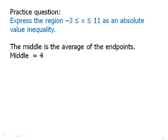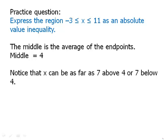So if the midpoint is 4, how far do we go in either direction? Notice that x can go as far as 7 above 4, which is 11, or 7 below 4, which is negative 3.